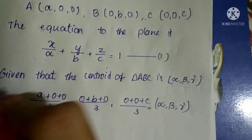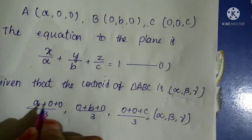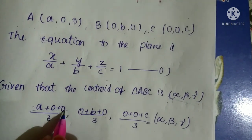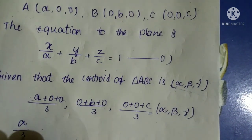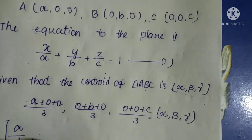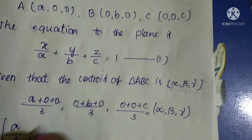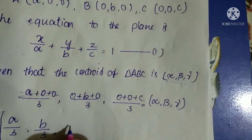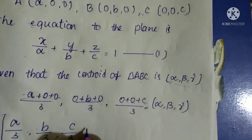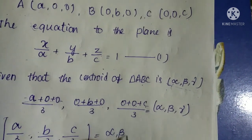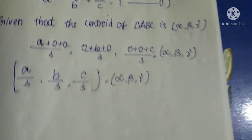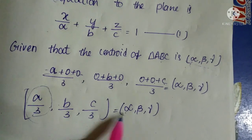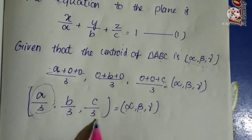So this equals (α, β, γ). Separating each coordinate: a/3 = α, b/3 = β, c/3 = γ.